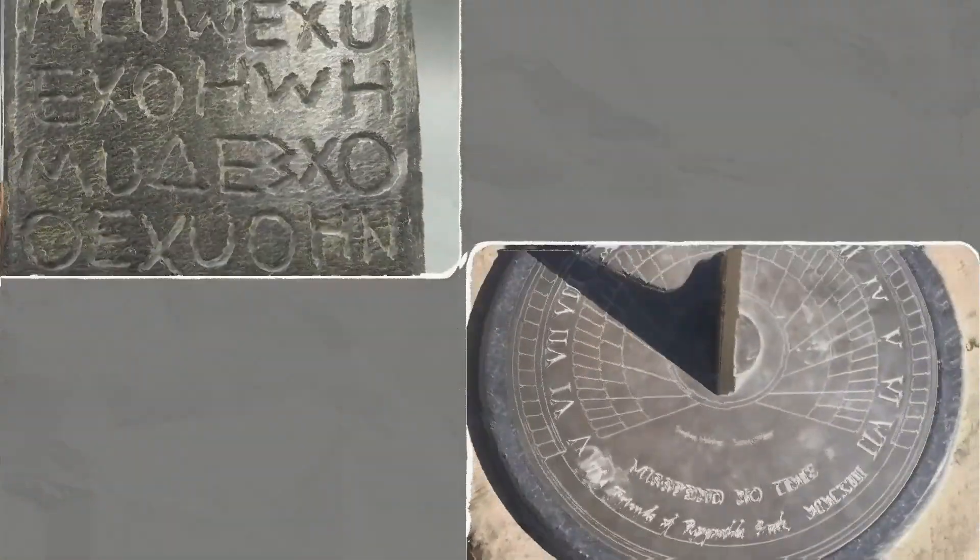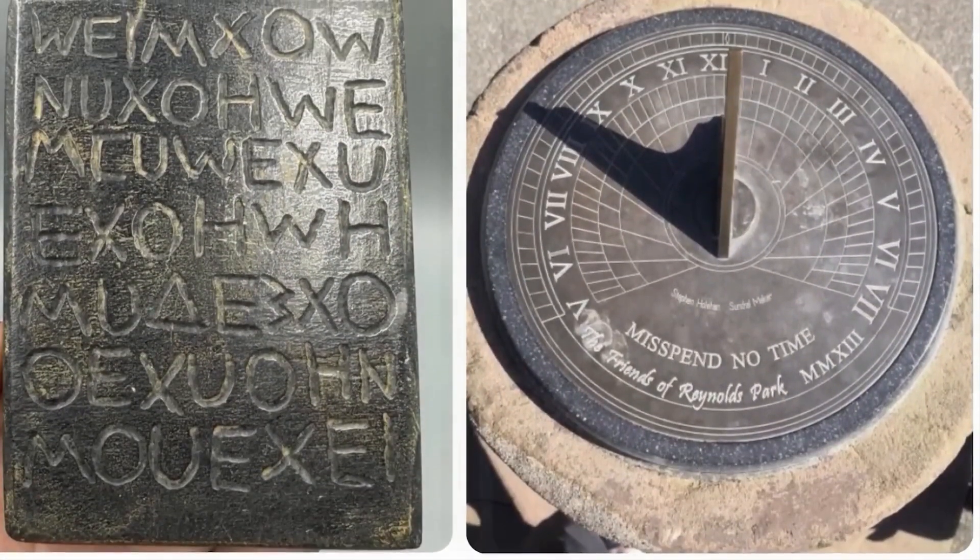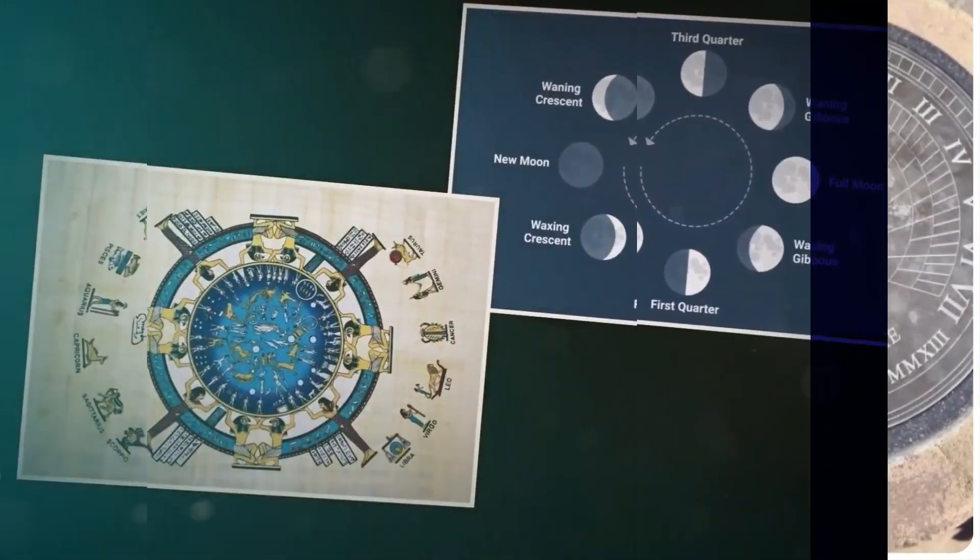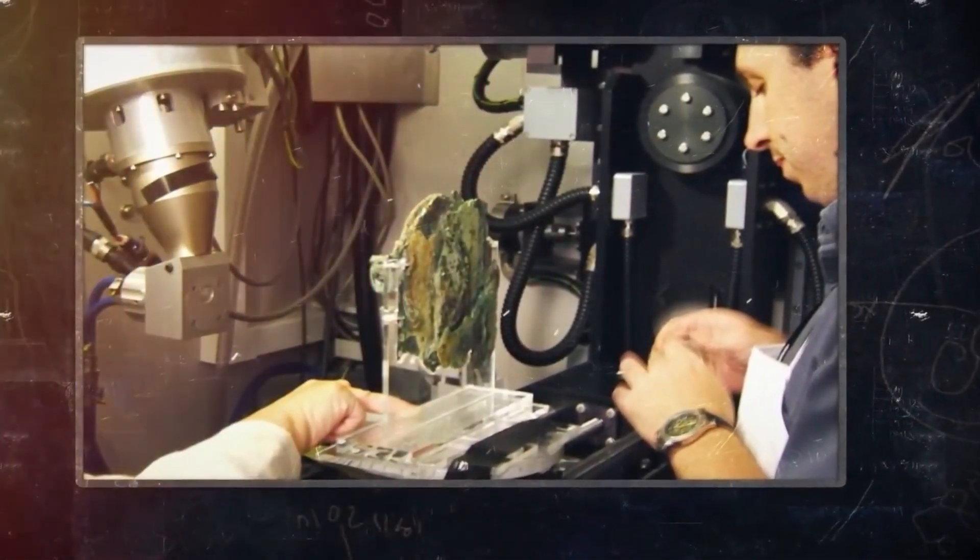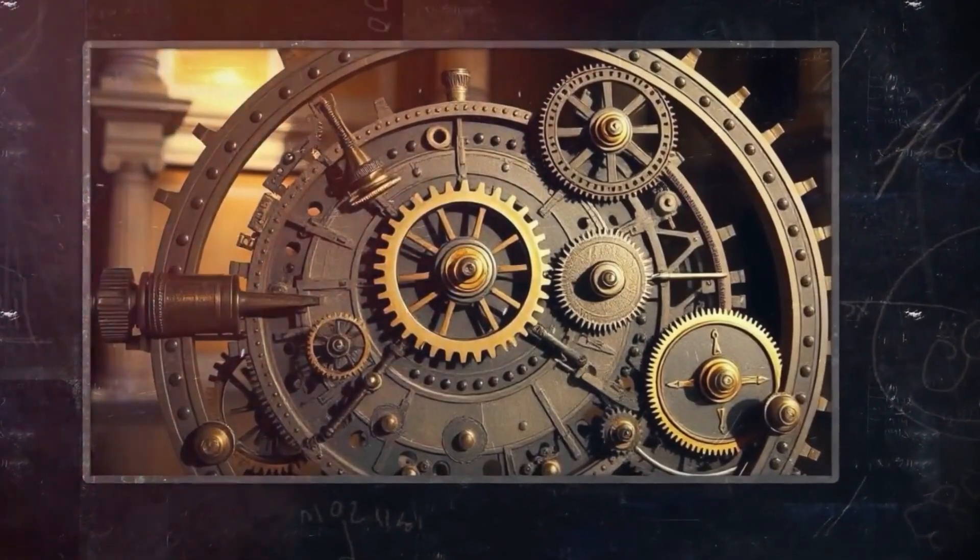The mechanism served as an astronomical calculator. Its front face displayed the positions of the sun and moon through the zodiac, divided into 12 constellations. A rotatable ring showed the Egyptian calendar, with 12 months of 30 days plus five extra days.